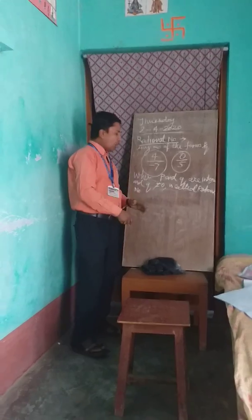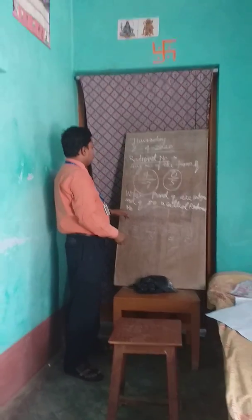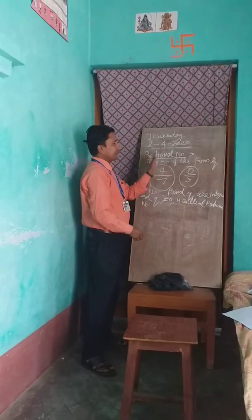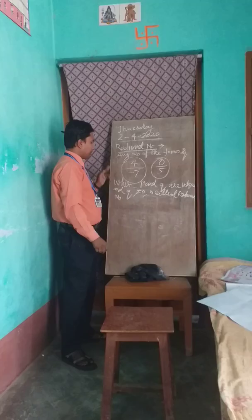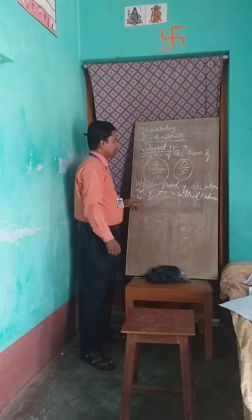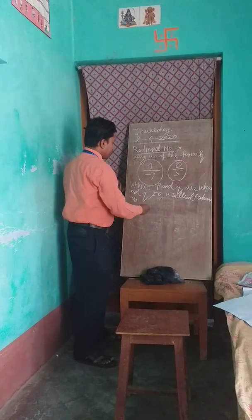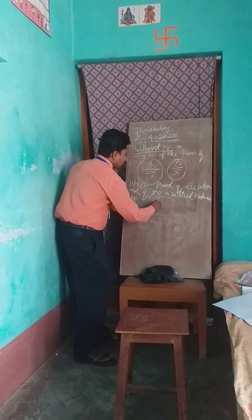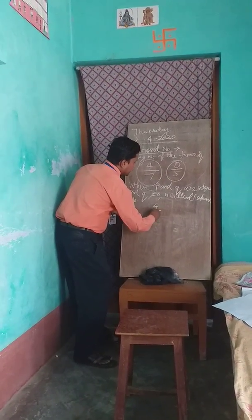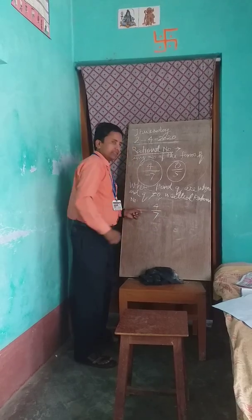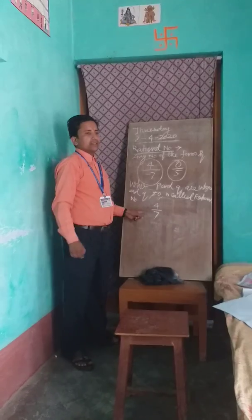All natural numbers are rational numbers. For example, 4 by 7 is a rational number.